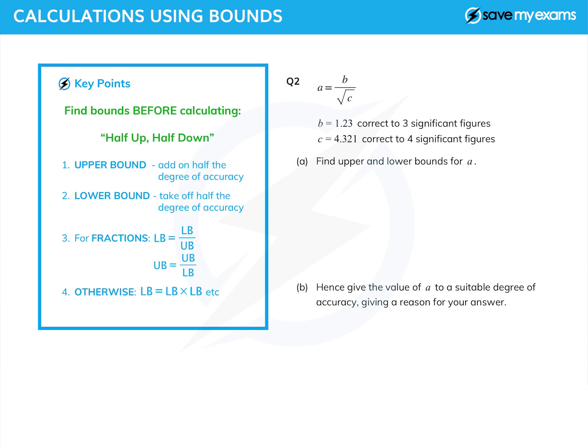So in the same way as I did before, I'm going to look at the upper and lower bounds of b. So that's a half down. Now we're looking at the third significant figure, so we take 3 and we go sort of a half down, which is 1.2, and then the 3 becomes 2.5. And when we go a half up, the 3 becomes 3.5.